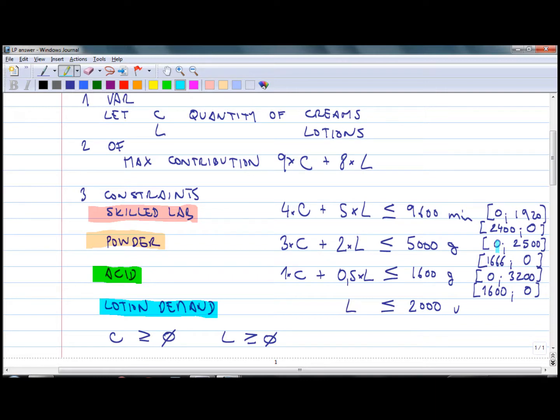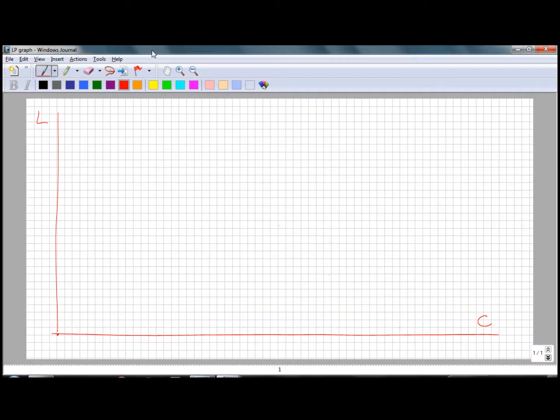For that we need to put a measure on the graph. We need to see what are the maximum values. I can see that C, maximum C is 2400. Maximum L is 3200. So on my graph each square is going to represent 100. I will put here 1000, 2000, 3000, and 1000, 2000, 3000.